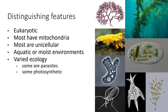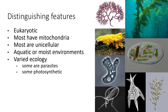Most of them live in aquatic or moist environments, and they have a varied ecology as well. Some are photosynthetic, like the algaes; others are parasites. In fact, it's a polyphyletic group — they have multiple unrelated ancestors, and we just don't really understand the origins of the protists.